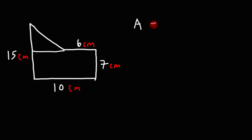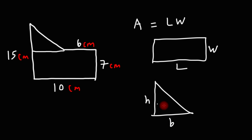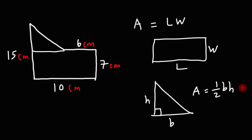Just to recap, the area of a rectangle is length times width — this is L, this is W. And for a triangle, where this is the base and this is the height, assuming we have a right triangle, the area of a right triangle is one half base times height. Using those formulas, we can find the area of this composite figure.